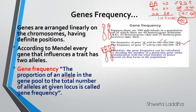Now let us calculate the gene frequency of small a. From the heterozygous group, small a = 40; from the homozygous recessive group, small a = 20 + 20 = 40. So total small a = 40 + 40 = 80. Frequency of small a = 80 ÷ 200 = 0.4. So gene frequency is the proportion of an allele in the gene pool to the total number of alleles at a given locus.